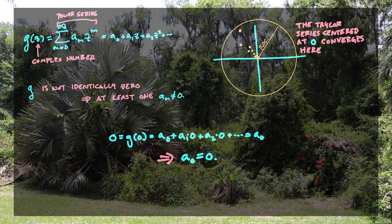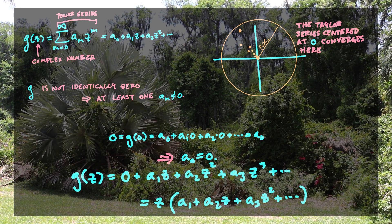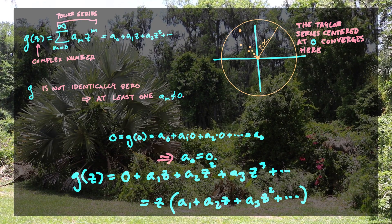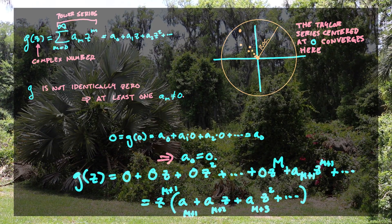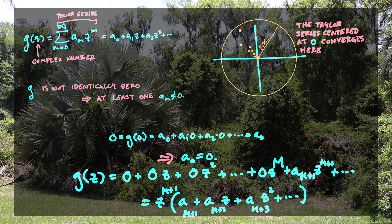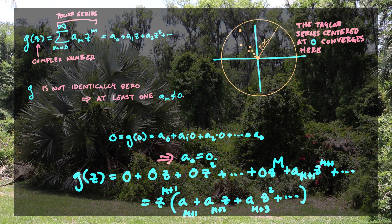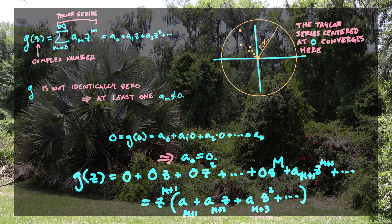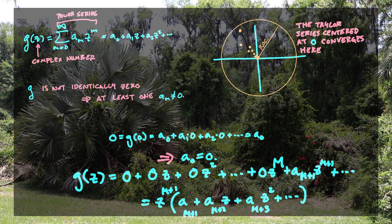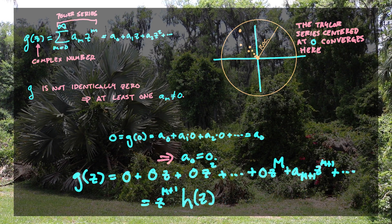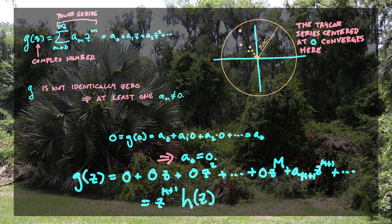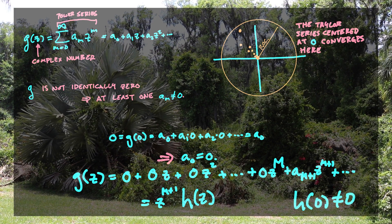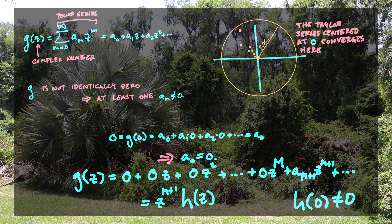That means we can factor out a Z out of that power series. We could have a higher-order zero where maybe the first M entries are all zero, so what we can do is factor out a Z^(M+1). What's left is a power series, and we'll call this power series the function H. H has the property that it's going to be non-zero at the origin, because otherwise we would have factored out more Z's from that power series.